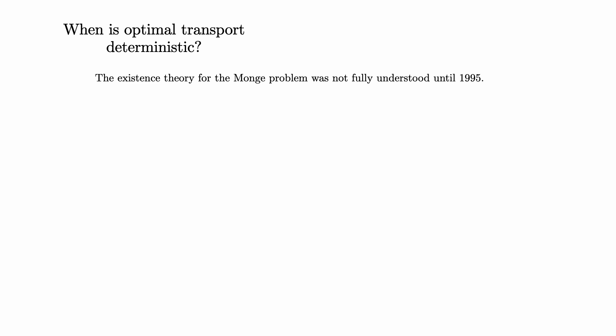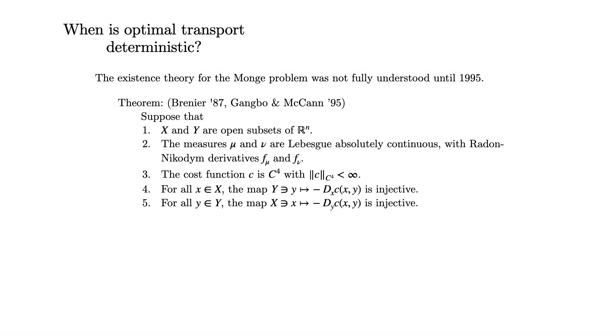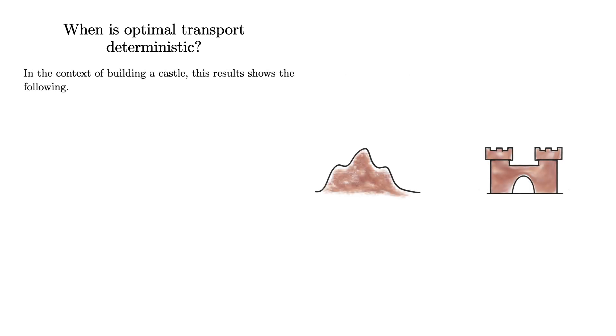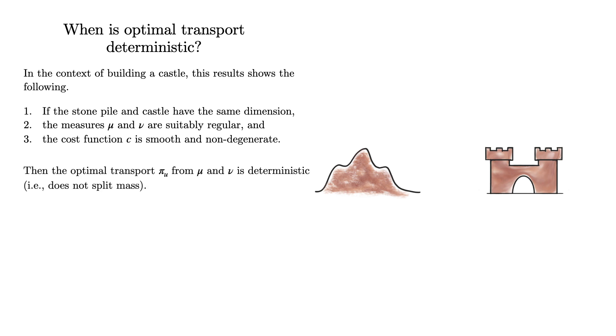This question was finally solved by Brenier in 1987 for the square distance cost, and a few years later, Gangbo and McCann generalized Brenier's results to consider arbitrary cost functions. But as you can see, the full statement of this theorem is fairly involved. In the context of Monge's original question, we can state it a bit more simply. If the stone pile and castle have the same dimension, the measures μ and ν are suitably well-behaved, and the cost function c is smooth and non-degenerate, then the solution to the Kantorovich problem is actually a solution to the Monge problem. In other words, it doesn't split mass.